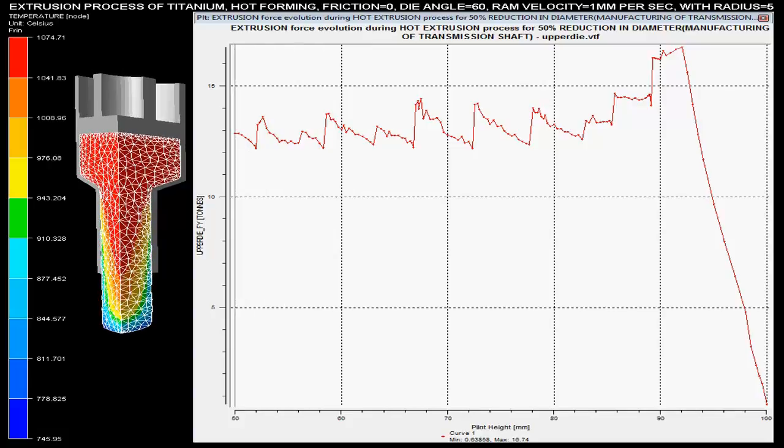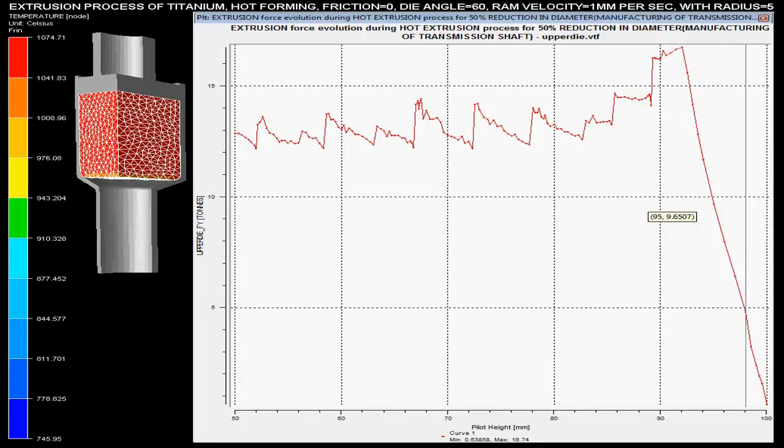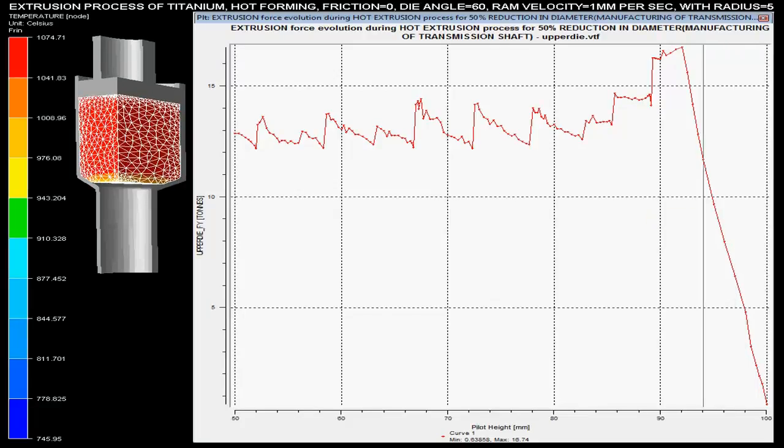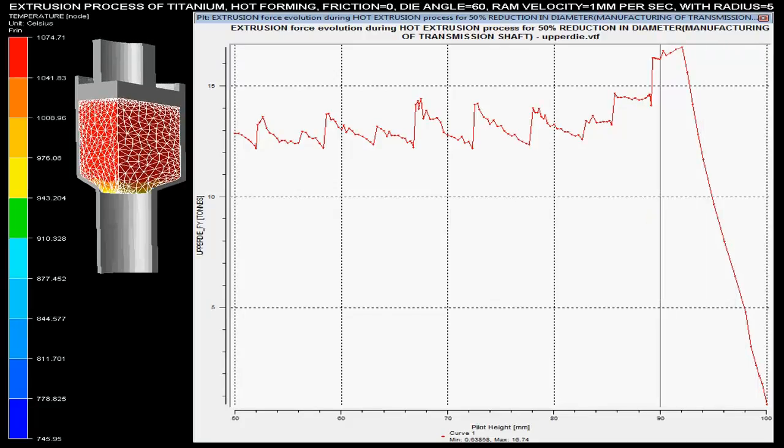As the billet height reduces, the force required for the extrusion of the solid increases. Velocity is set as 1 mm per second with a radius of 5 mm.